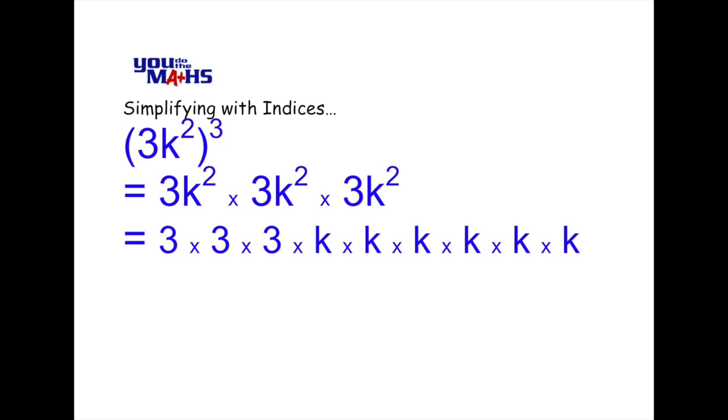3 multiplied by 3 by 3 is 27 and we've got k multiplied out six times so it's k to the power 6.